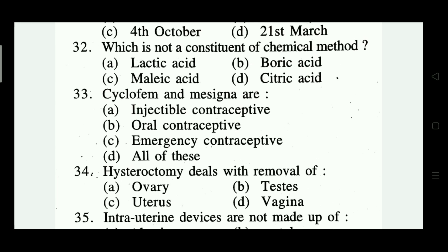Number thirty-four: hysterectomy deals with removal of — ovary, testes, uterus, vagina. The right answer is uterus — option C.